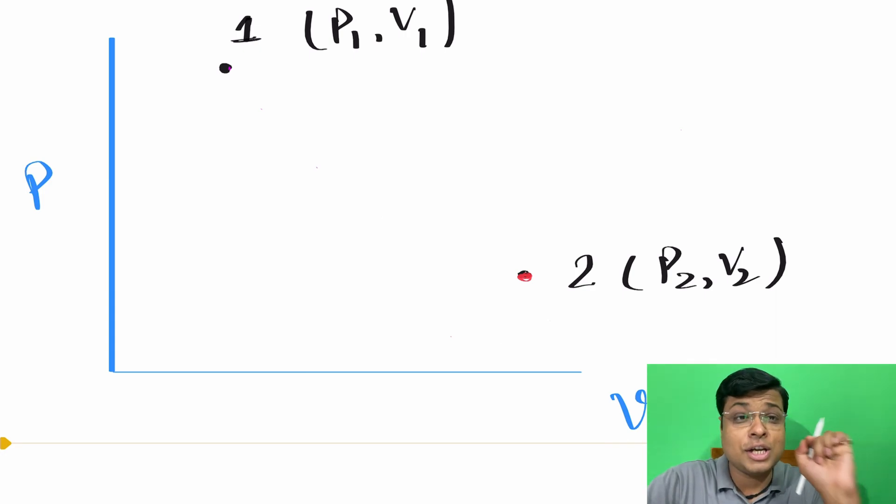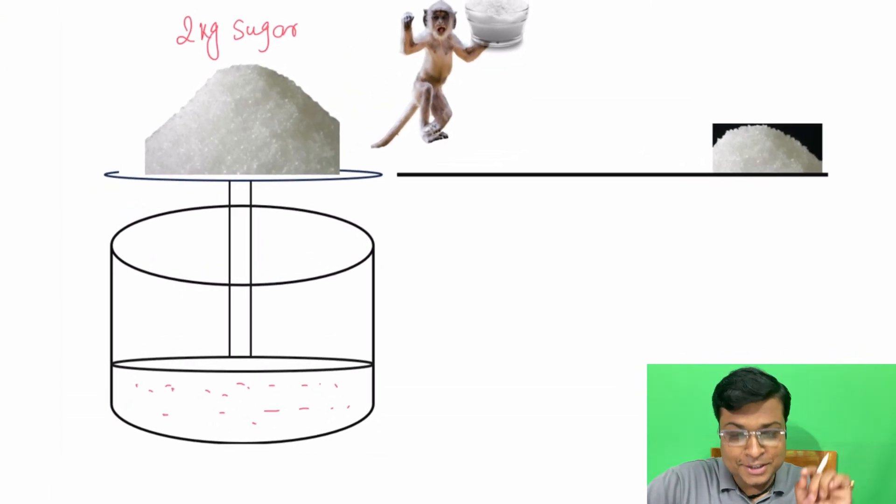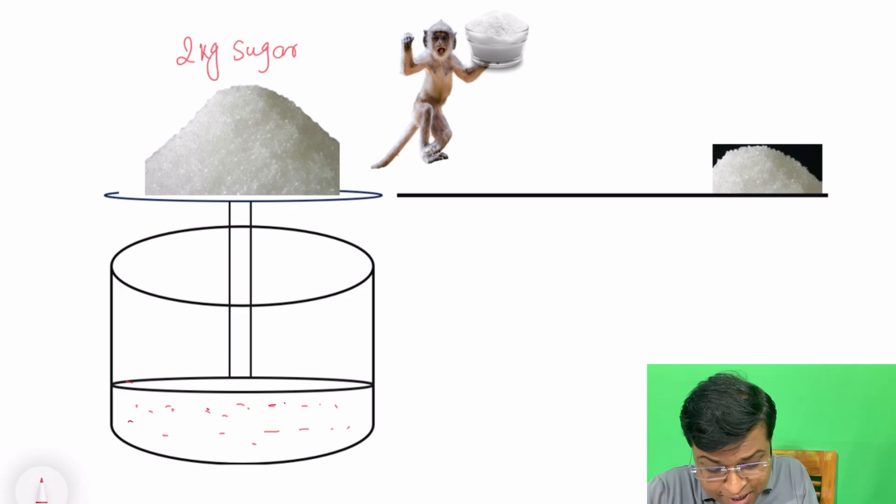Now what is quasi-equilibrium process? For that, let me tell you a story. This is a story about a monkey and an ant. The story is like this: suppose you have a piston-cylinder arrangement containing a gas.